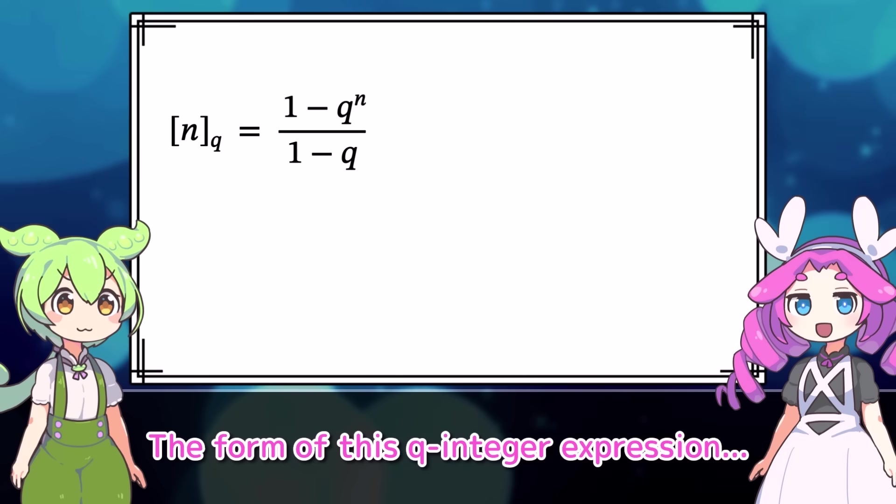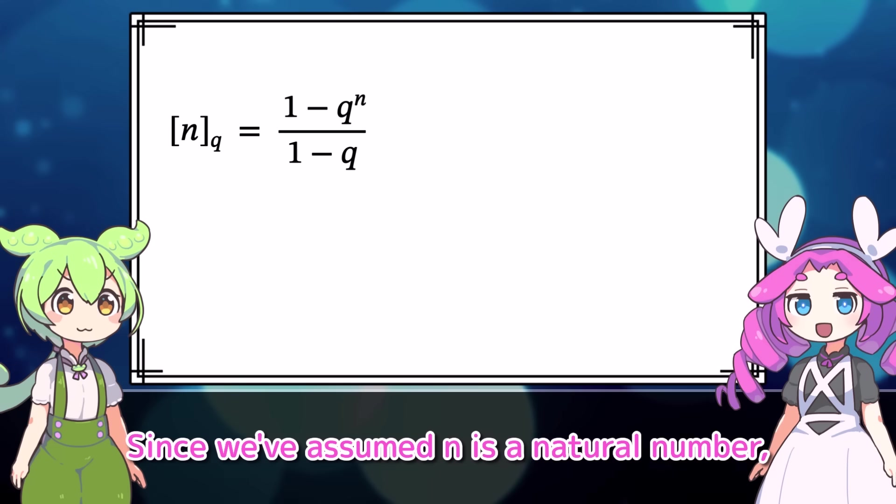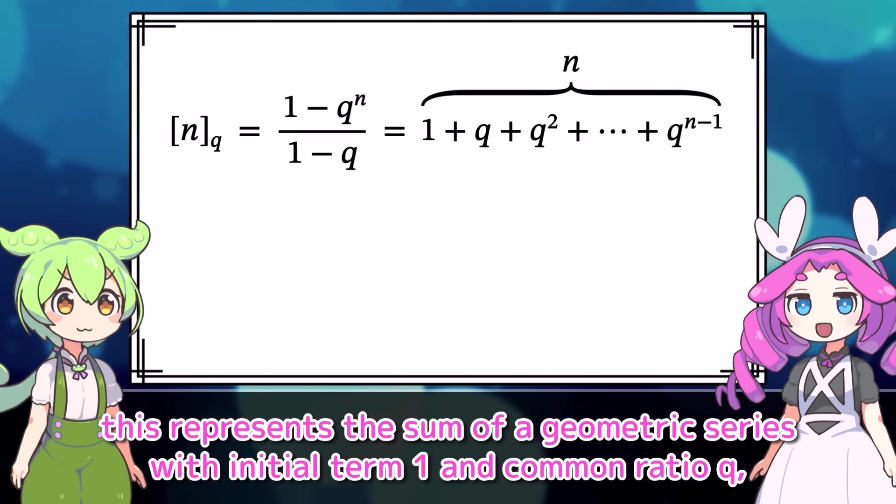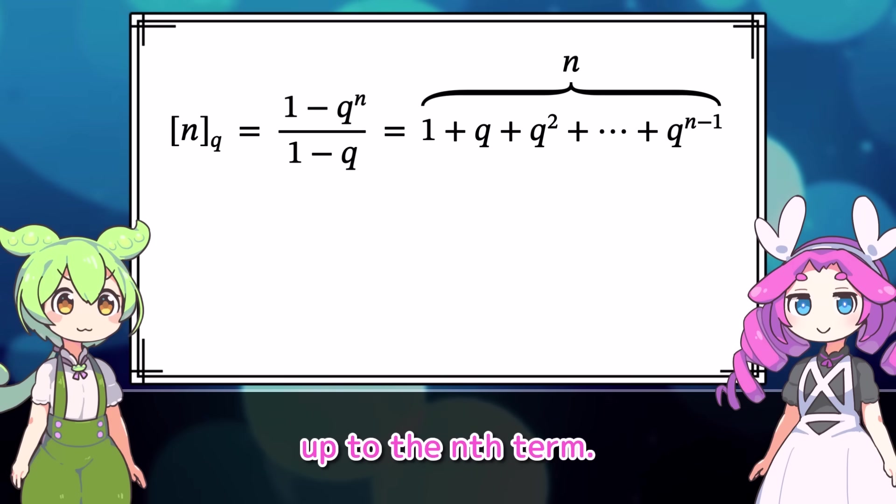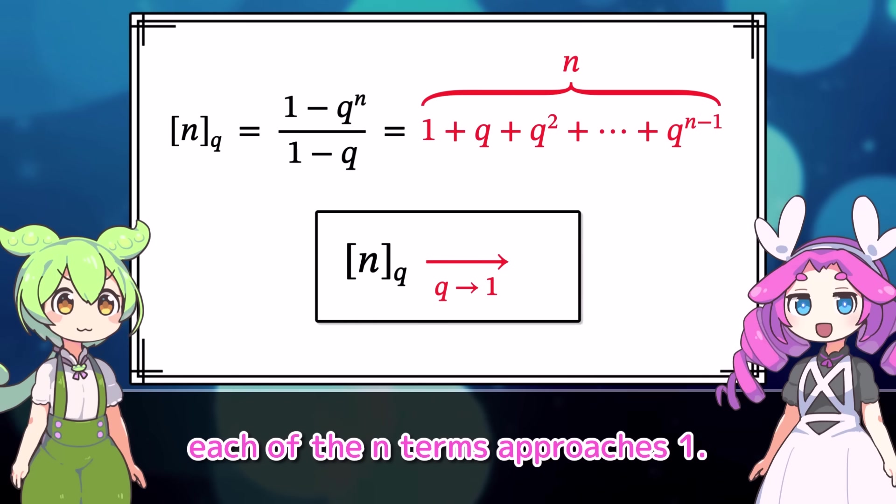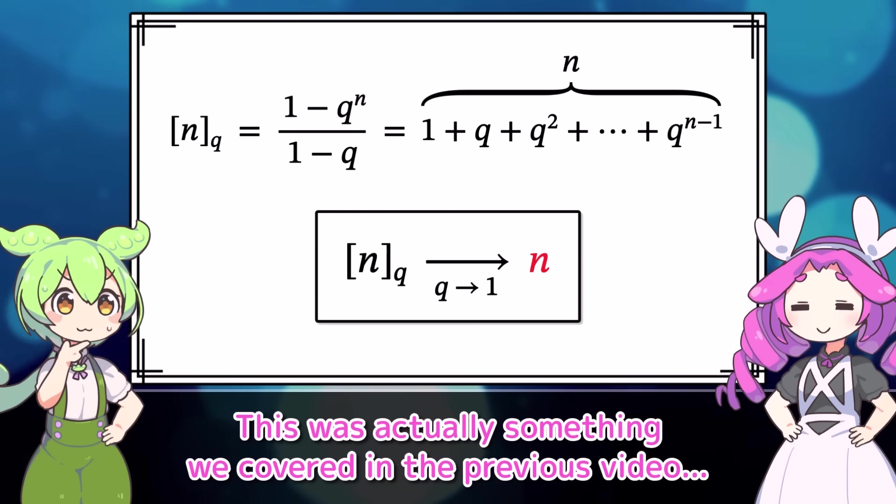The form of this q-integer expression actually matches the formula for the sum of a geometric series. Since we've assumed n is a natural number, this represents the sum of a geometric series with initial term 1 and common ratio q up to the nth term. And as q approaches 1, each of the n terms approaches 1. That means the q-integer of n approaches n. Oh, you're right! This was actually something we covered in the previous video.